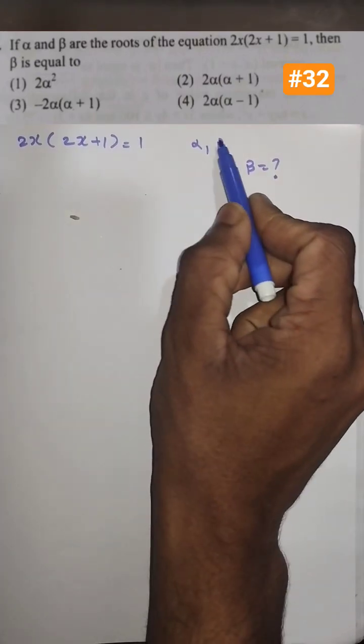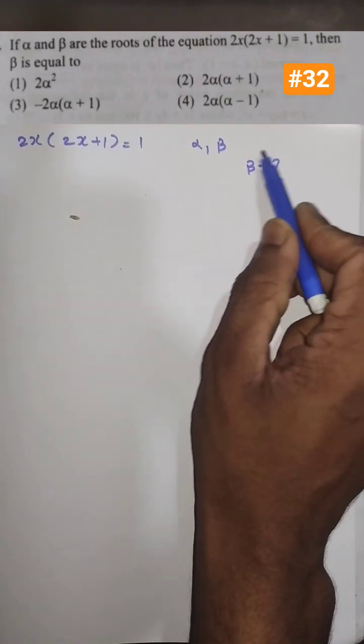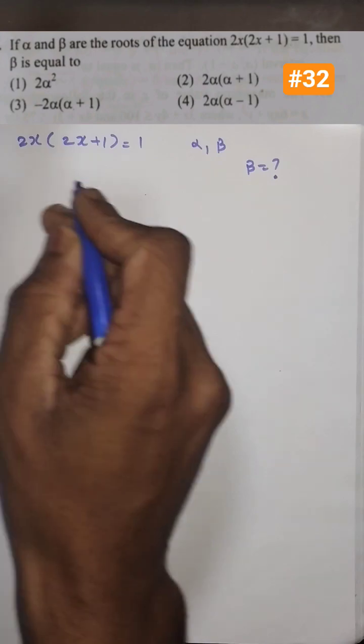In this question we have a quadratic equation and alpha, beta are the roots of this quadratic equation. We want to find what is the value of beta in terms of alpha. It is so simple.